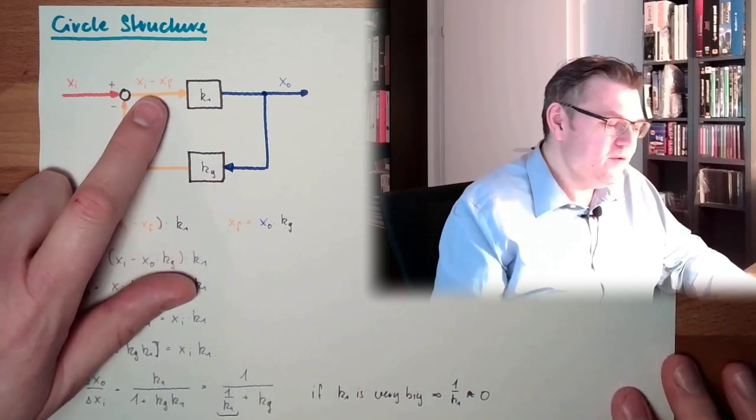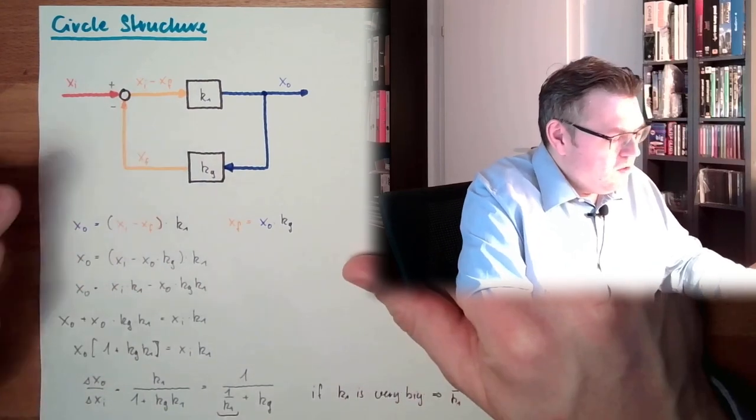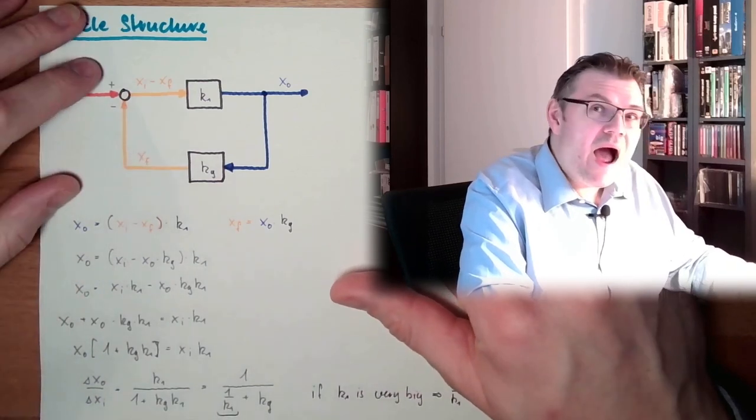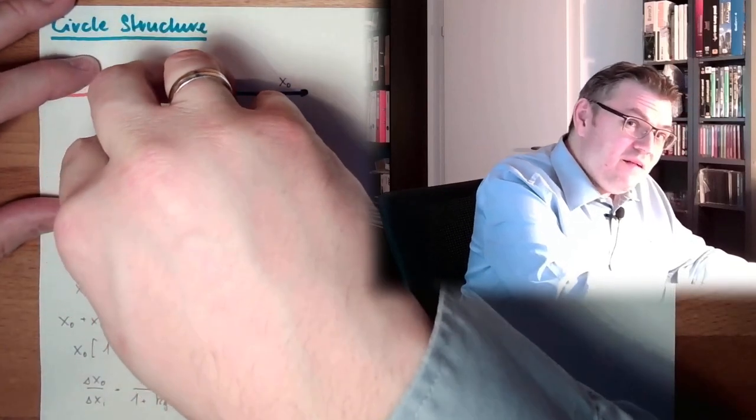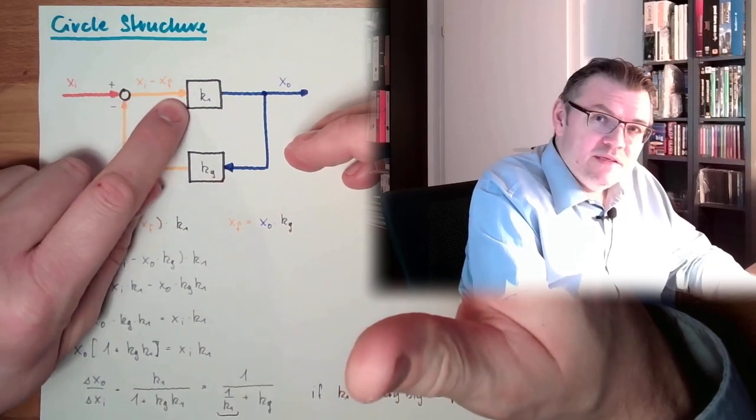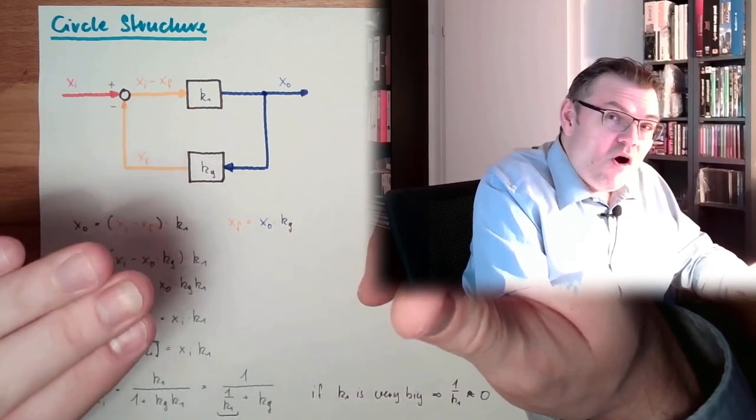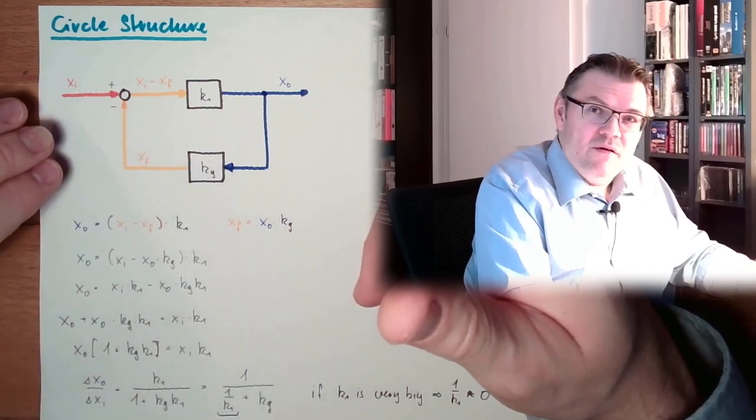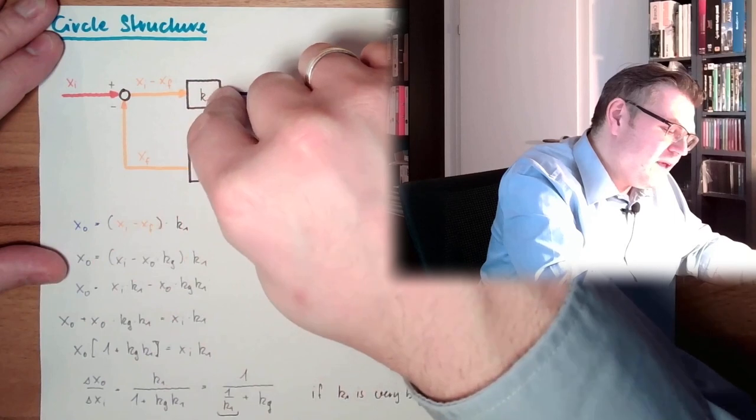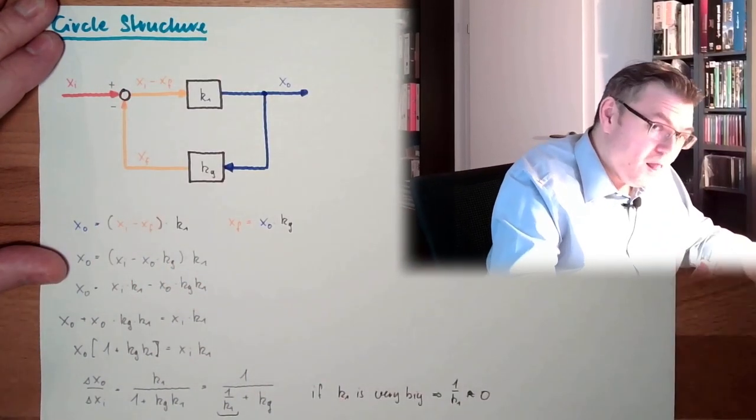And here comes already the big benefit of it. So I compare the input value to something the measurement device itself produces. And only the difference is used to indicate the measurement. So actually it's compensating the input value. So the input value is compensated by the measurement range. And if the gain factor here is very high, the compensation is working pretty well.